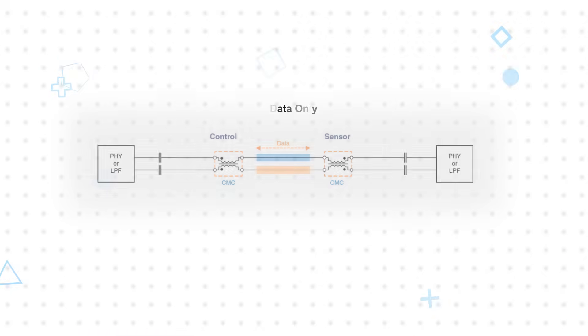The first option is just using SPE for data transmission between the controller and sensor, actuator, or other field device. This only requires the RCM70CGI-471 common-mode choke.